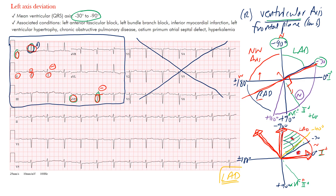What do we see left axis deviation with? A left anterior fascicular block — that's often how we diagnose it. Also left bundle branch block, as the late secondary force comes leftward. Inferior MI, because the inferior portion of the heart is taken out, pushing the axis superior, posterior, and leftward. Left ventricular hypertrophy from aortic stenosis or hypertension. COPD. Ostium primum atrial septal defect. And hyperkalemia — you can see almost anything with hyperkalemia.